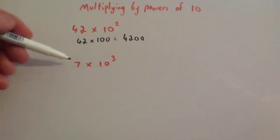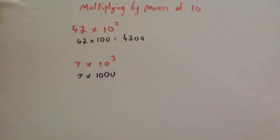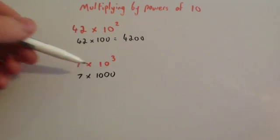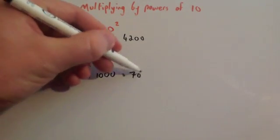Let's have a look at this one. 7 multiplied by 10 cubed. Well that's 7 multiplied by 1,000 because 10 cubed is 1,000. And then 7 times 1,000 would be 7,000 adding on three zeros. So that would be 7,000.